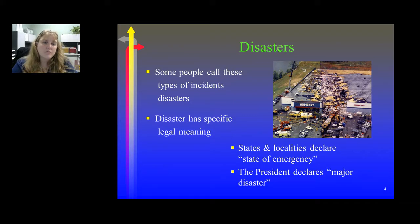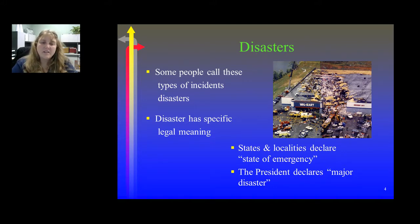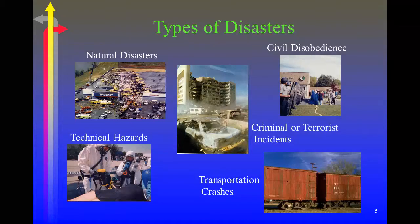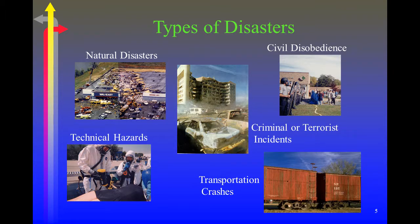A layperson is more likely to refer to a mass casualty incident as a disaster. Disaster has a specific legal meaning. States and localities will declare a state of emergency, and the president is responsible for declaring a major disaster. The types of disasters can range from natural disasters — earthquakes, hurricanes, and so forth — to civil disobedience, criminal or terrorist acts, transportation crashes involving rail cars or roadways, or technical hazards.